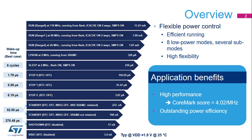STM32L5 devices feature a flexible power control, which increases flexibility in power mode management and further reduces the overall application consumption. This slide details the consumption in the various power modes for the STM32L5-62. Run mode can support a system clock running at up to 110 MHz with only 11.21 mA. The consumption is even lower when frequency and voltage are decreased: 7 mA in range 1 at 80 MHz, and 1.87 mA in range 2 at 26 MHz.